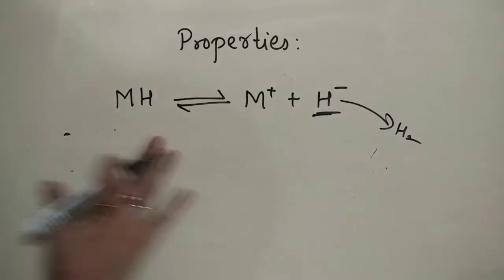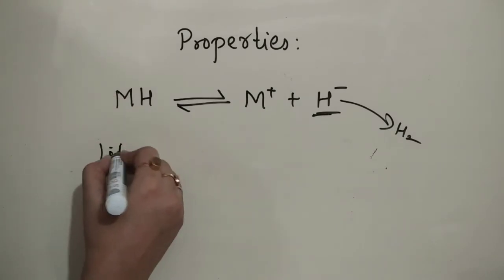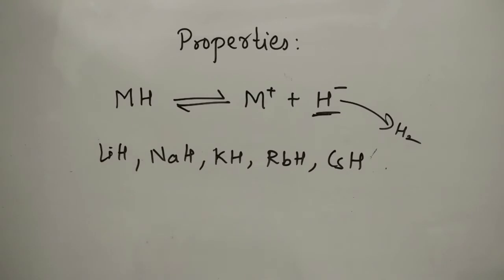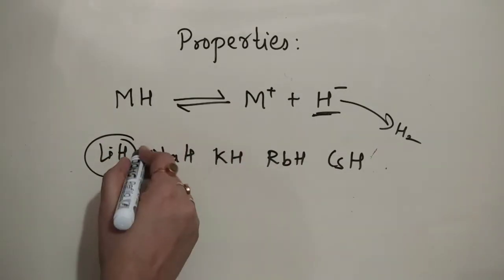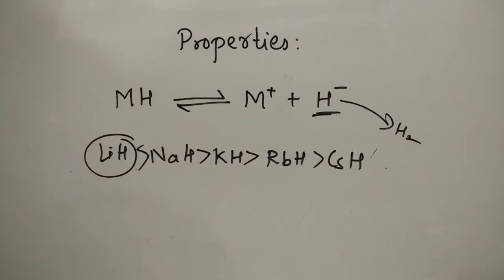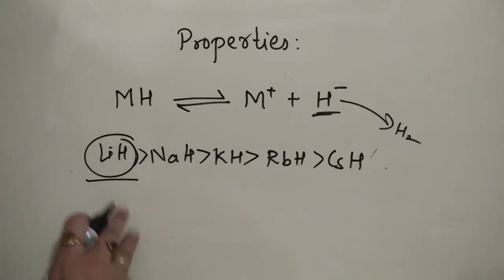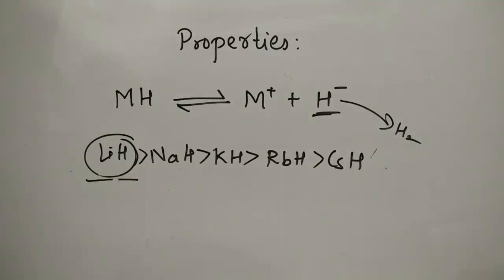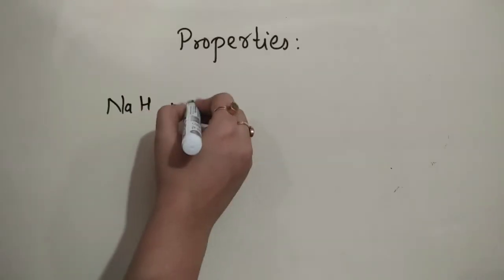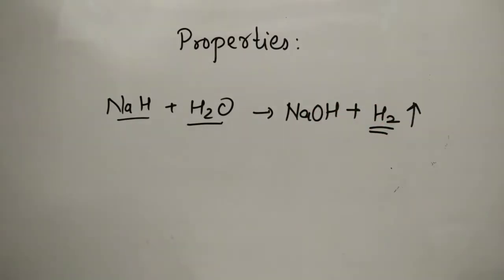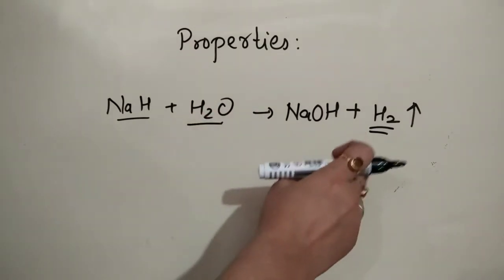Regarding stability, down Group 1 we have LiH, NaH, KH, RbH, and CsH. LiH is the most stable hydride and as we move down the group, stability decreases — the hydride more easily releases hydrogen. Lesser the size of the metal atom, stronger will be the hydride. These hydrides react violently with water forming NaOH and releasing hydrogen gas; the reaction is so exothermic that the evolved hydrogen catches fire.